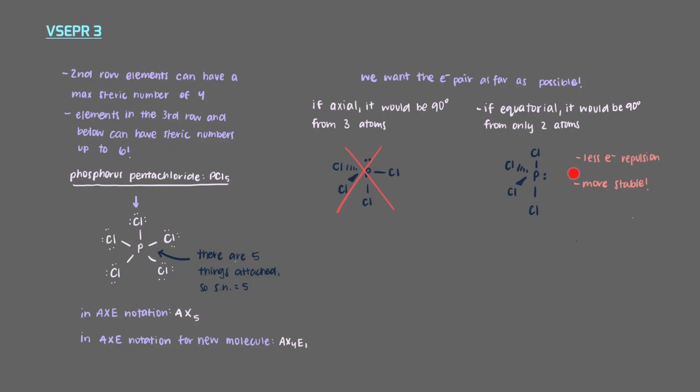So we would get this shape, which kind of looks like a seesaw if you rotate it like this and put some people on it.